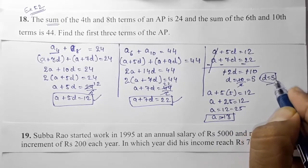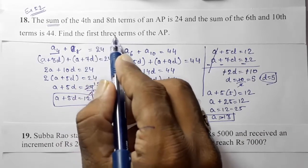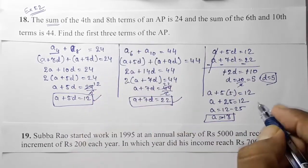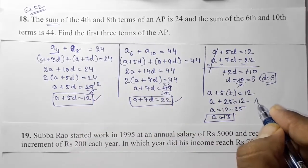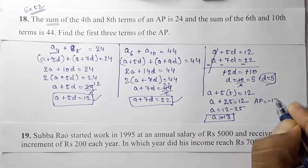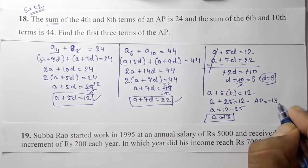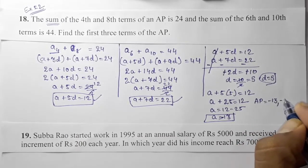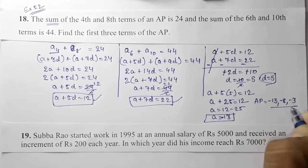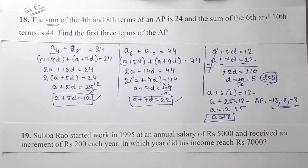So we got a = −13 and d = 5. They asked us to find the first three terms. The first term is a = −13. Adding the common difference of 5 gives the second term: −13 + 5 = −8. Adding 5 again gives the third term: −8 + 5 = −3. So the first three terms of the AP are −13, −8, −3.